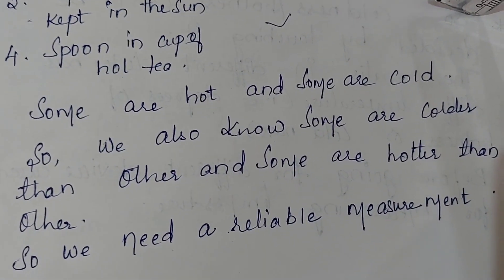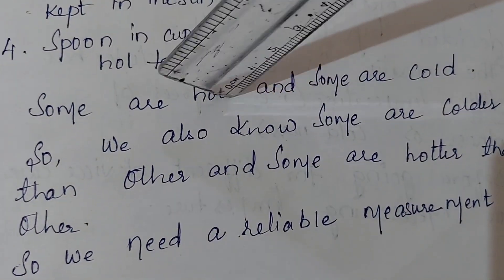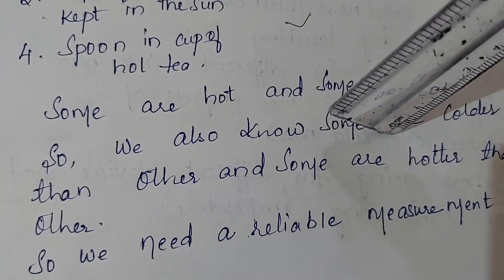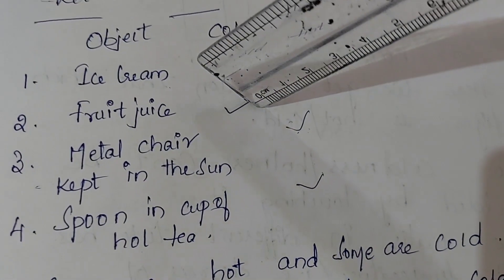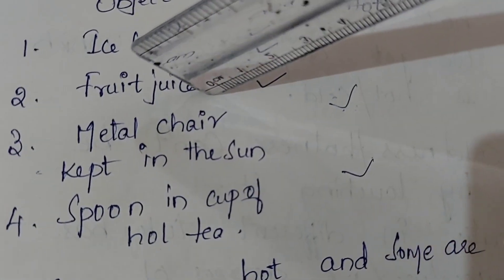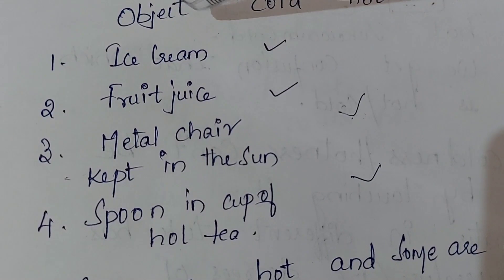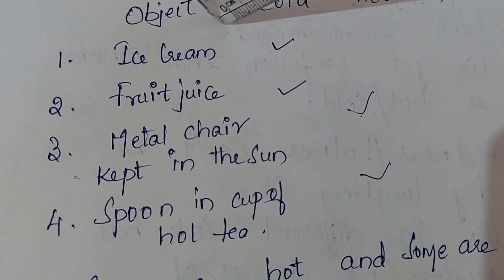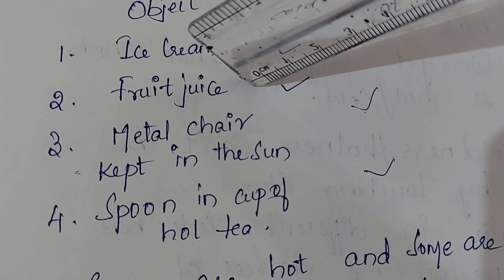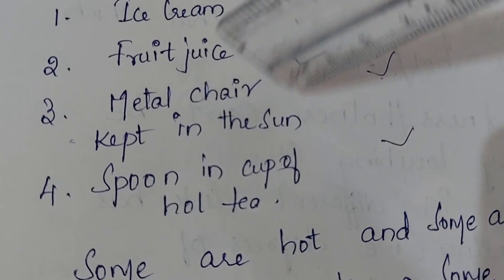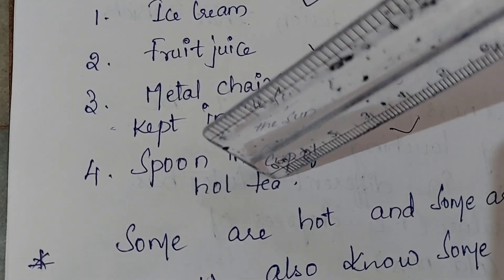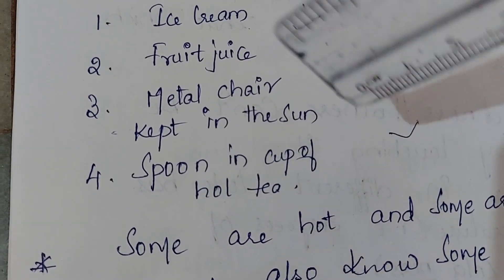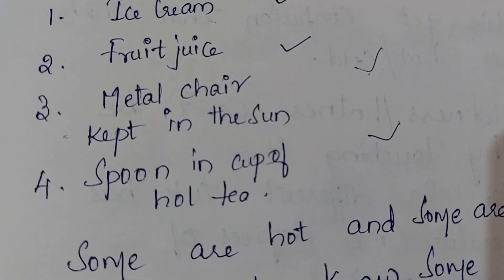You also know that some are colder than others. Ice cream and fruit juice are both cold, but if I refrigerate, I can feel that ice cream is cooler than fruit juice. Similarly, a metal chair in the sun and a cup of coffee — if you touch both at the same time, you feel that the cup of coffee is hotter than the metal chair in the sun.